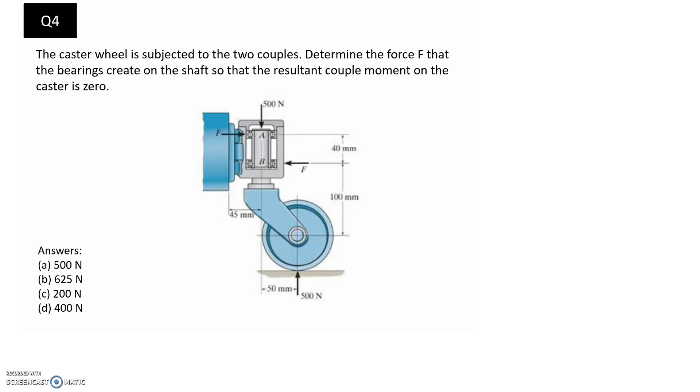So the way that I'm going to approach this question is that we know the sum of the couples have to be equal to zero, and we should be able to work out what each couple moment is, remembering that you can get this from it being the force multiplied by d, which is the separation distance between the two forces that make up the couple.